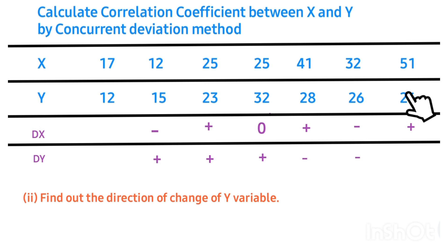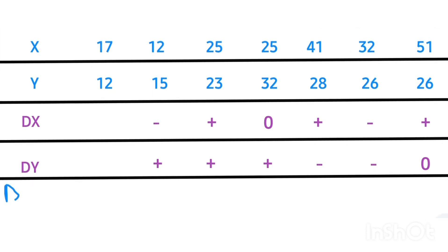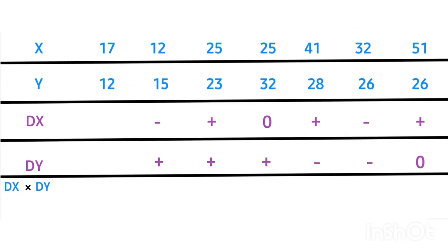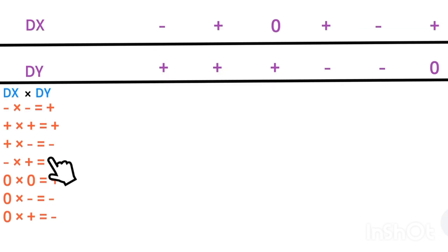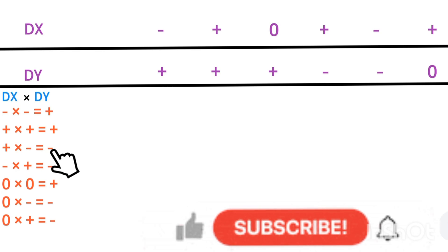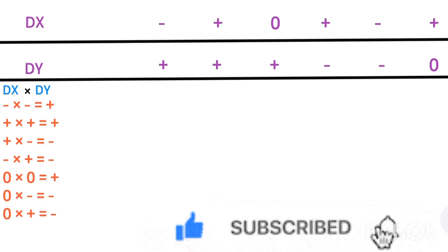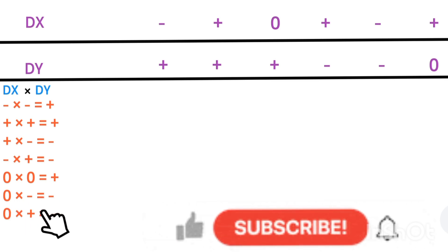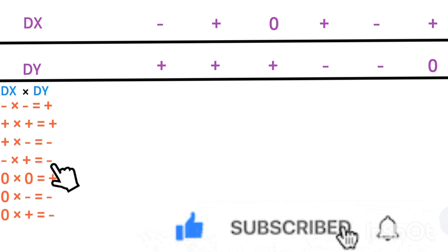Step 3 says: multiply Dx by Dy. The rules for multiplication are: minus times minus equals plus; plus times plus equals plus; plus times minus gives minus; minus times plus gives minus; zero times zero gives plus; zero times minus gives minus; zero times plus gives minus. Applying these rules to our values, we get the products for each pair.